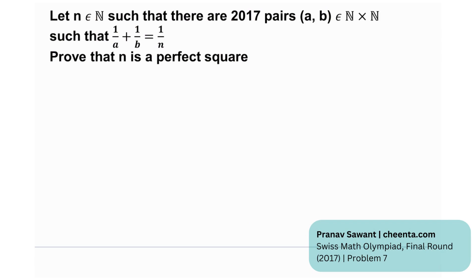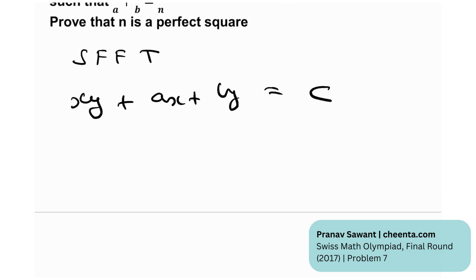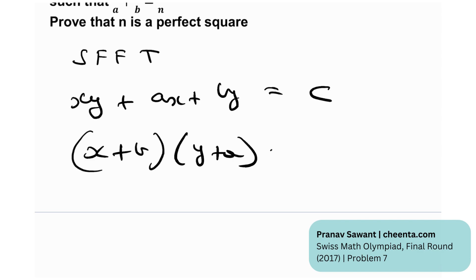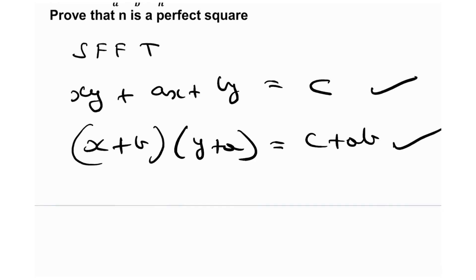Before we jump in, let me talk about SFFT — Simon's Favorite Factoring Trick. If we have an equation like xy + ax + by = c and we want to factorize it, there exists a very nice factorization: (x + b)(y + a) = c + ab. If you expand this out you'll see the original equation and this factorized form are equivalent.